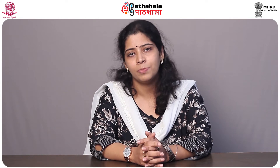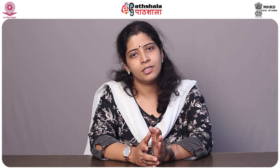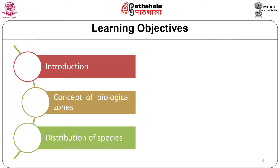Each region will have a variety of ecosystems like forests, grasslands, wetlands, rivers, and lakes, which will have specific plants and animal species. In this module we are going to study about the concept of biogeographical zones of India and the distribution of its species.